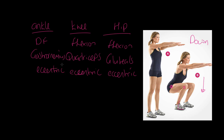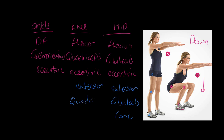On the way up from the squat: at the hip we have extension, done by the gluteals — concentric. At the knee: extension, done by the quadriceps — concentric. At the ankle: we're now plantar flexing, done by the gastrocnemius — concentric. So the upward phase is consistently concentric across all three joints.